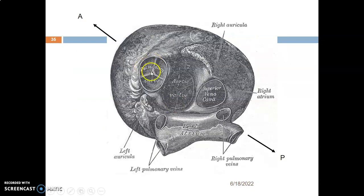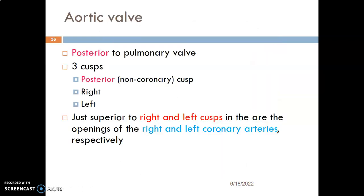The aortic valve is posterior to the pulmonary valve and it also has three cusps: the posterior cusp, right cusp, and left cusp. Just superior to the right and left cusps you'll find two openings of the coronary arteries — they form aortic sinuses. The right and left cusps of the aortic valve form right and left aortic sinuses, which are the origin of the right and left coronary arteries that supply the heart.